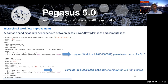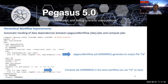Another data management improvement for hierarchical workflows is improved handling of data dependencies between Pegasus workflow jobs (called DAX jobs) and compute jobs at the same level. Starting with 5.0, in a hierarchical workflow, you can designate the output your sub-workflow will create and have dependent compute jobs take those outputs as input. Pegasus will seamlessly handle the underlying data transfers — just like it does for compute job dependencies at the same workflow level.